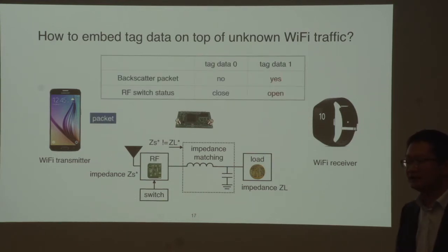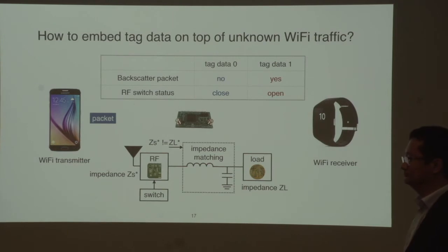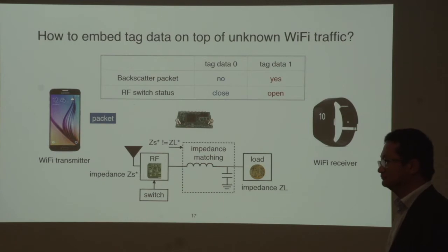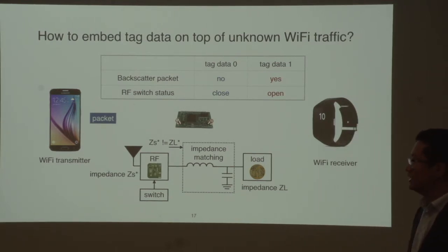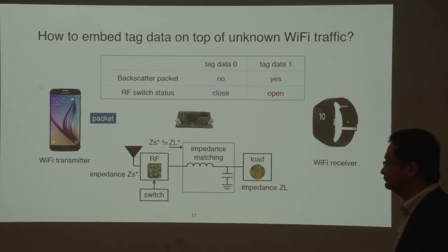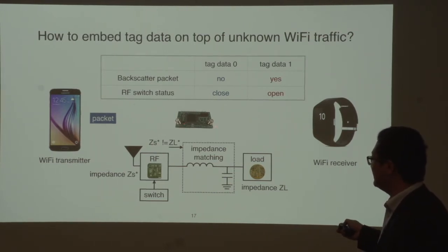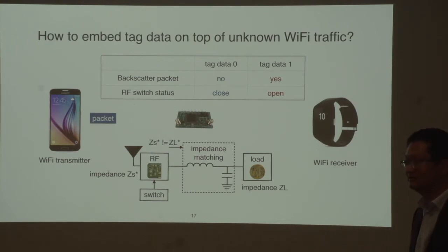The encoding logic becomes simple: if the tag wants to transmit data zero, it closes the RF switch and does not reflect the packet. If it wants to transmit data one, it opens the RF switch and reflects the packet. Regarding interference from other signal paths — the reflected signal from the tag operates on a different channel compared to the Wi-Fi transmitter channel, which I will explain later.